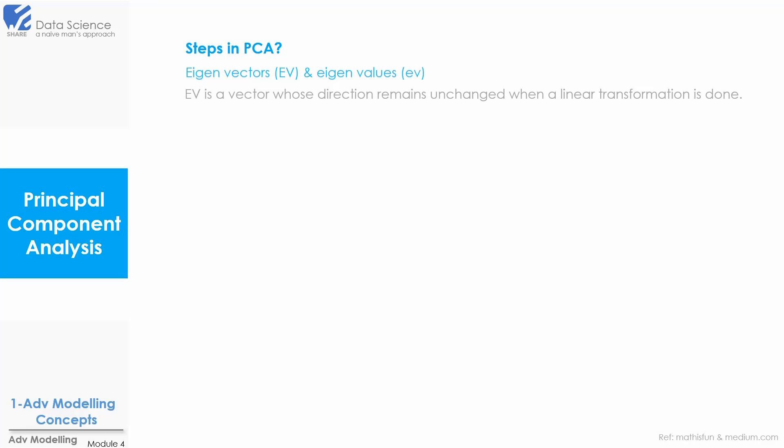Eigenvector is a vector whose direction remains unchanged when a linear transformation is done. So for a square matrix A, an eigenvector and eigenvalue make the equation shown here as true. A here is a square matrix. A matrix with equal number of rows and columns is a square matrix. So if this equation holds true, then V and lambda are eigenvector and eigenvalues respectively.